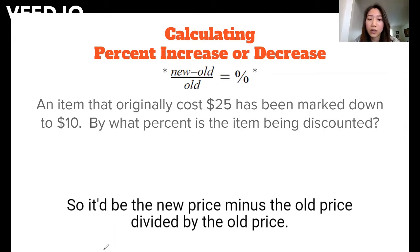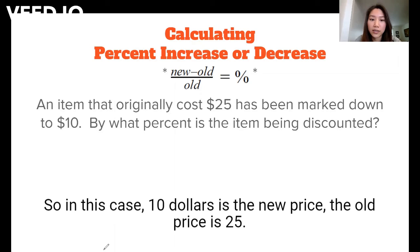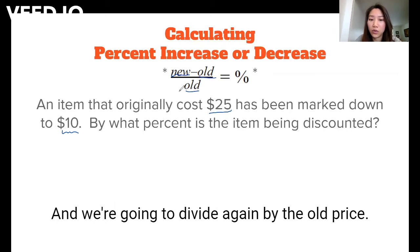It would be the new price minus the old price divided by the old price. So in this case, $10 is the new price, the old price is $25, and we're going to divide again by the old price.